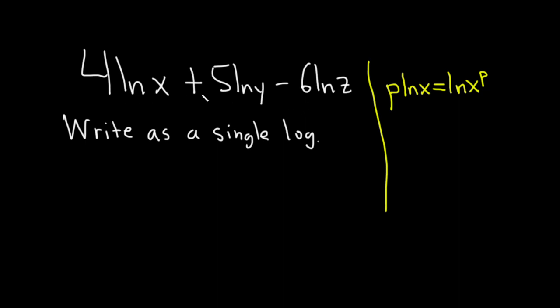Let's go ahead and do that first since we have numbers in front of all of these logs. For this one here we have a 4, so we can bring the 4 up and write it as the natural log of x to the fourth. Then we have plus, and then we can take this 5 and write it up here, so this is the natural log of y to the 5.